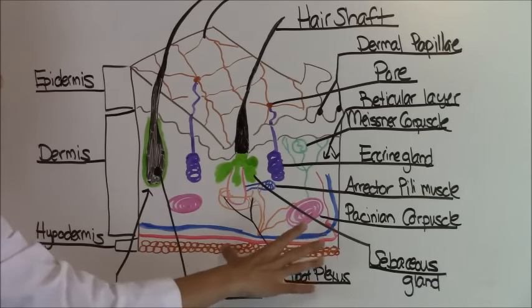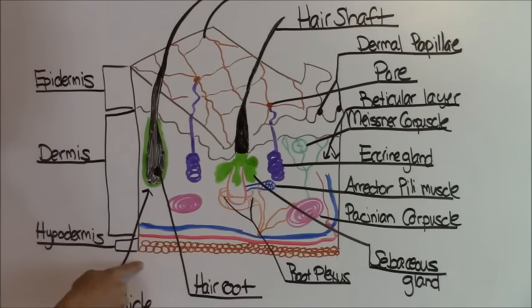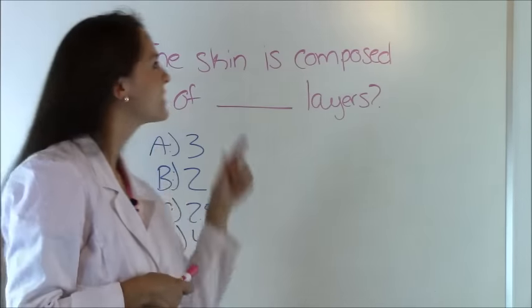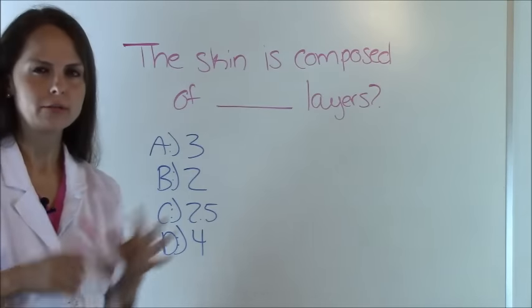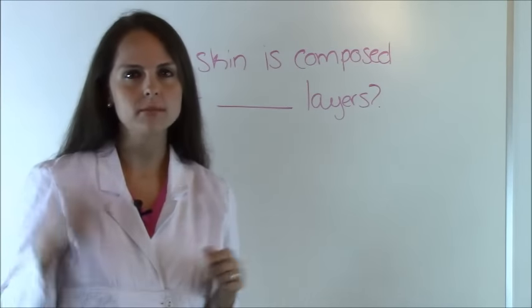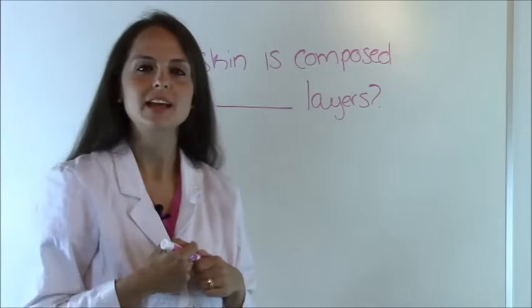Now we went over our diagram and let's do a couple of quiz questions. So let's see what it says. The skin is composed of blank layers. So when we were looking at our skin diagram, how many layers do you remember that there were? Let's look at our choices.